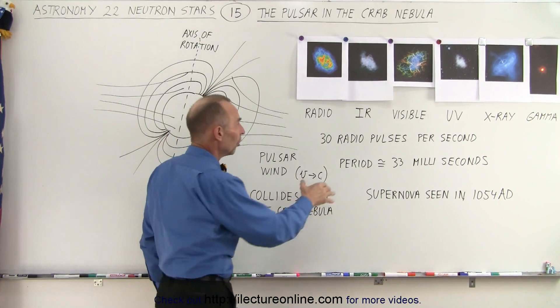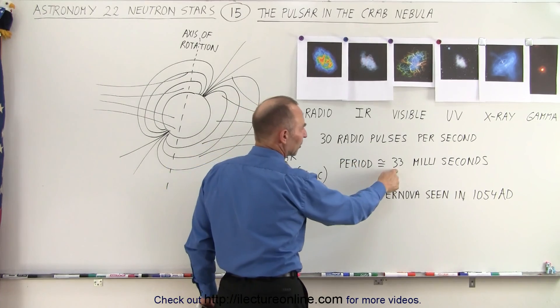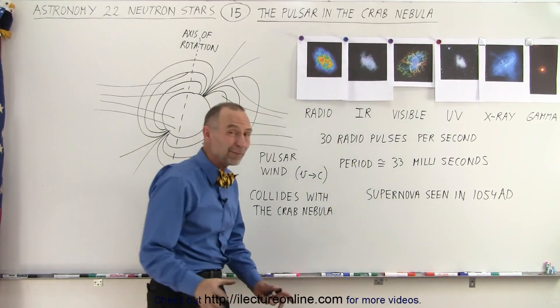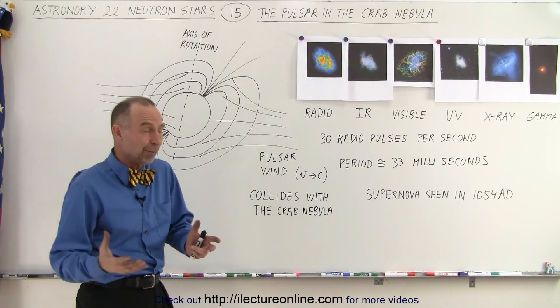Notice that the pulses occur about 30 pulses per second, which means that the period between pulses is about 33 milliseconds. So it's not a particularly fast pulsar, not a particularly slow pulsar.